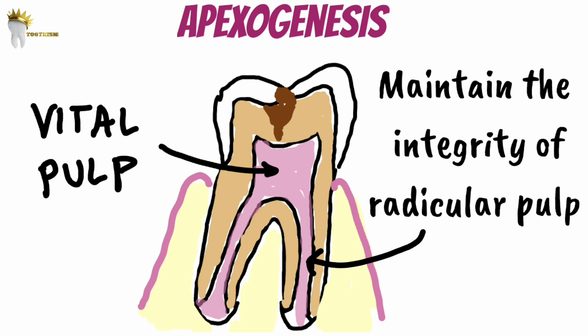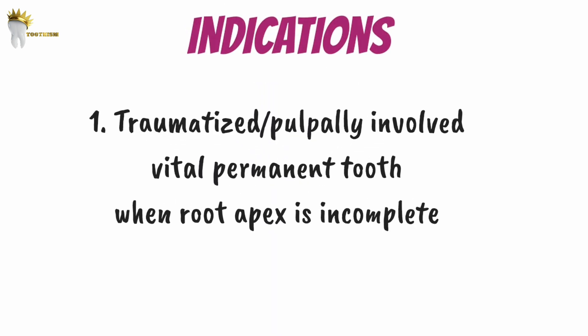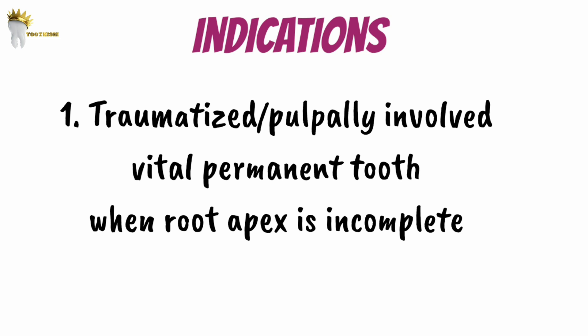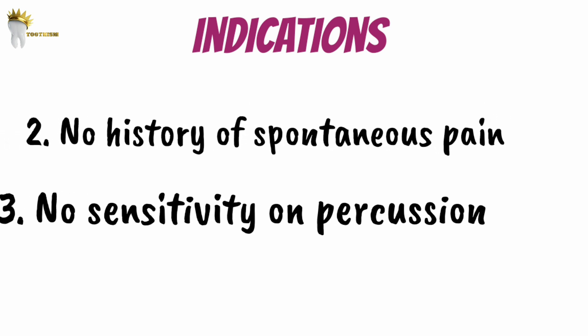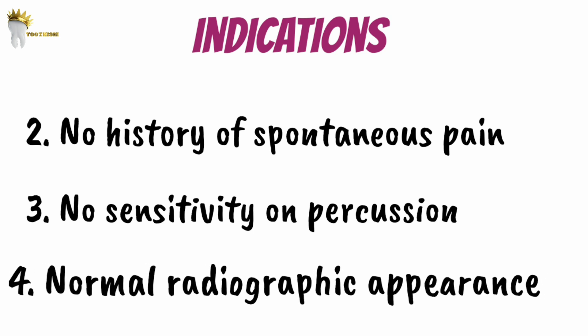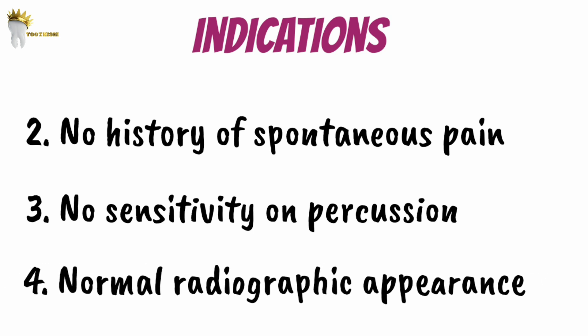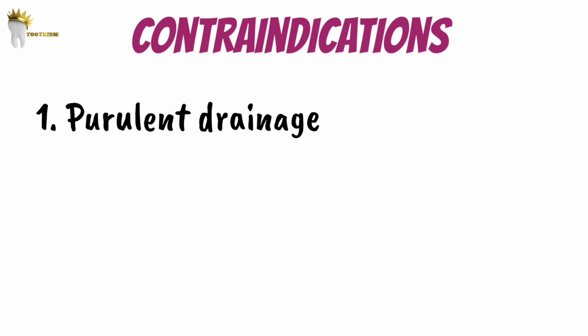The goal is formation of a normal root apex. The indications of this procedure include: first, a traumatized or pulpally involved vital permanent tooth where the root apex is not completely formed. Next, no history of spontaneous pain, no sensitivity to percussion, and a normal radiographic appearance.